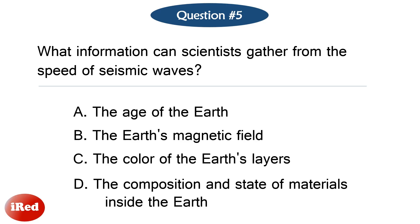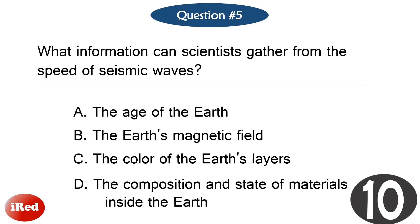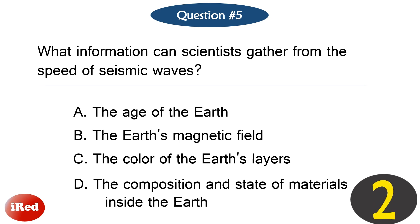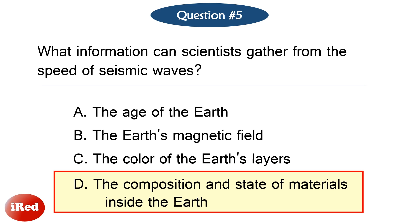Question number five. What information can scientists gather from the speed of seismic waves? The correct answer is letter D, the composition and state of materials inside the earth.